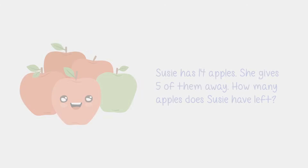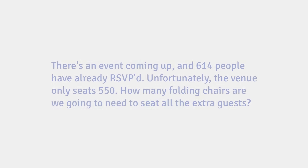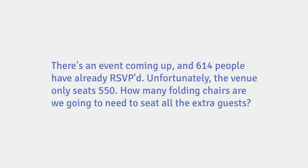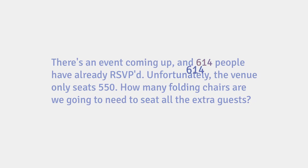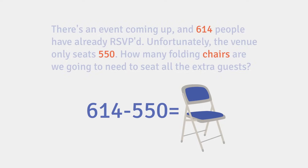Remember doing those in school? So-and-so has 14 apples, she gives 5 of them away — you know the rest. When it comes down to it, all we have here is a simple subtraction problem, and one that you might even be able to solve in your head. Just take the number of people coming, subtract the number of seats at the venue, and that'll give us our answer.